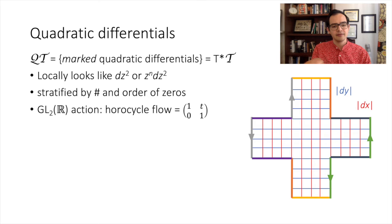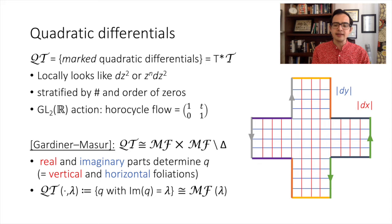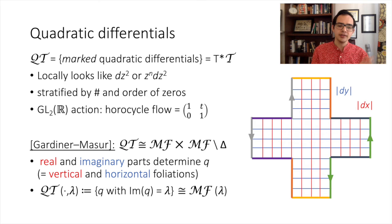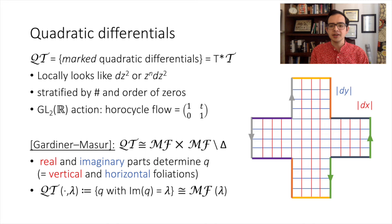A classical theorem of Gardiner and Masur says that a quadratic differential is uniquely specified by its horizontal and vertical foliations — its real and imaginary parts — and that any two transverse measured foliations define a unique quadratic differential. We record this by saying QT equals the square of measured foliation space minus the thick diagonal Δ consisting of pairs which aren't transverse to each other. This means the space of quadratic differentials with a given horizontal foliation — equivalently lamination — lambda, is exactly the space of measured foliations transverse to lambda. Note that the horocycle flow preserves the horizontal foliation and hence preserves each one of these subspaces.